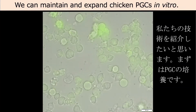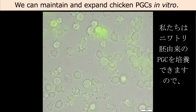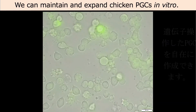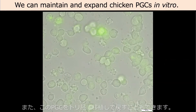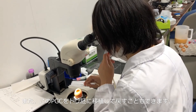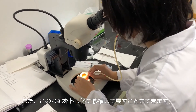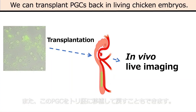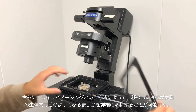Let me introduce our techniques. First is germ cell culture — we can maintain and expand germ cells in vitro, so we can obtain gene-manipulated germ cells easily. Second is cell transplantation in living embryos. We can transplant such germ cells into bird embryos, and this manipulation is very easy in bird embryos, which is one of the great advantages of these species. Thanks to these advantages, we can observe and analyze germ cell migration in living embryos in detail.